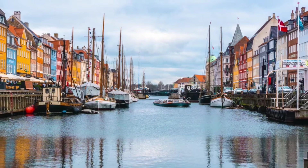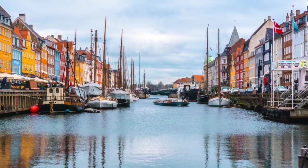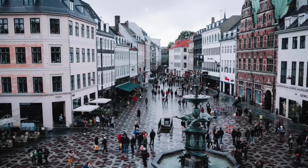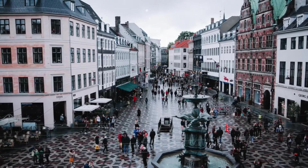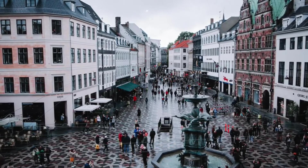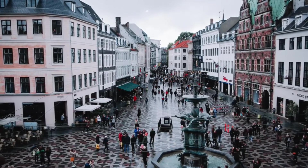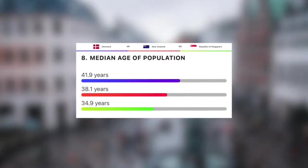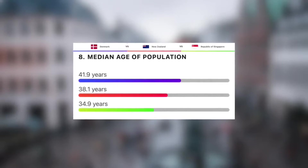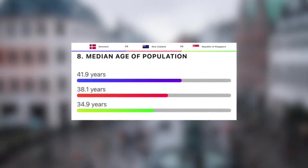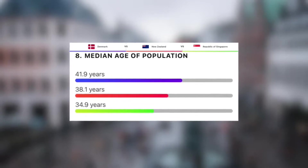And finally, to end this section, let's take a look at the average age of the population. The lower here the better, as this makes for a younger workforce and less of an ageing population. So another win here for Singapore at a very young 34.9 years, followed by New Zealand at 38.1, and then the oldest out of the three, Denmark, at just under 42 years.